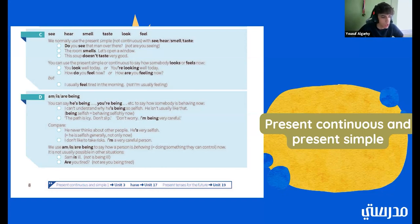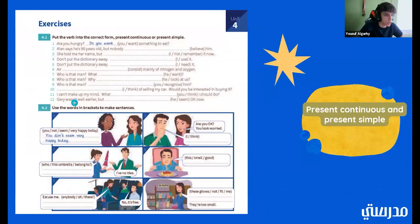So, we use am, is, are, being to say how a person is behaving, as we talked about. Which also means, like, they're doing something that they can control. It is not usually possible in other situations. So, you can say Sam is ill. But, you can't say, is being ill. Or, you can say, are you tired? But, you can't say something like, are you being tired? All right. So, here are the exercises. We have to put the verbs in the correct forms, like we did before.